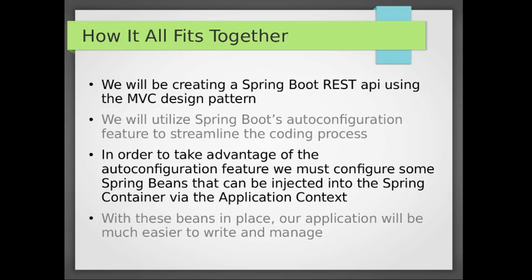The reason I'm telling you all of this is because we will be using Spring Boot to make a REST API using the MVC design pattern. We will utilize Spring Boot's auto-configuration feature to streamline the coding process, and it will make the coding process very simple. In order to take advantage of the auto-configuration, we must configure some of the beans that can be injected into the Spring Container via the application context. This is why I explained what the application context was and how Spring Beans fit into that — all of this has a reason.